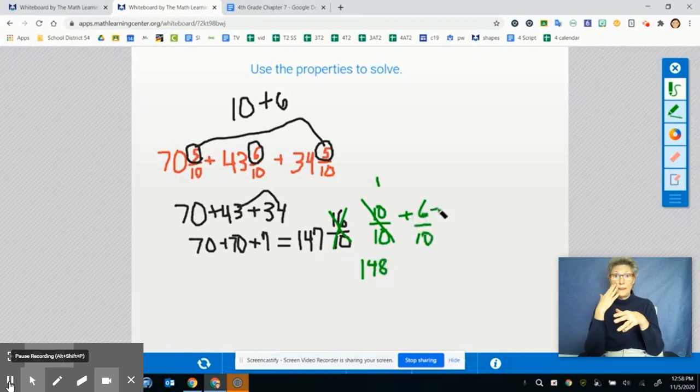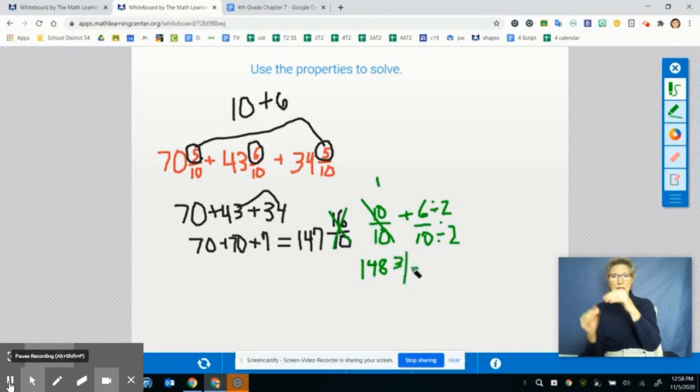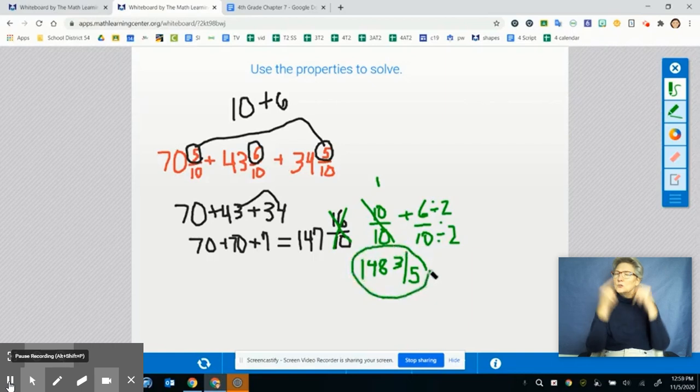Now I know these are even, so let's divide these both by 2 so that I can get a reduced fraction. So 6 divided by 2 is 3 and 10 divided by 2 is 5. So I've used mental math to find the answer to this problem. And again, why? Because our denominators are all the same.